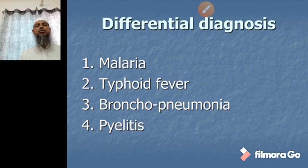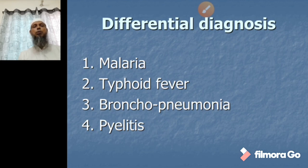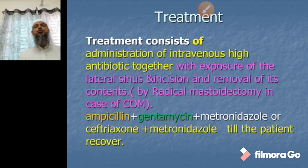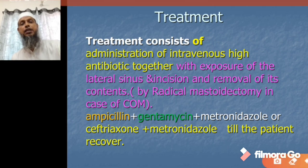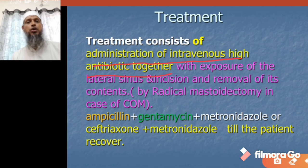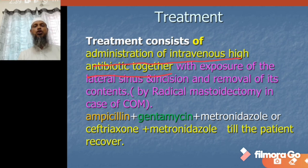The differential diagnoses are: malaria, typhoid fever, bronchopneumonia, and pyelitis. Treatment consists of intravenous high-dose antibiotic administration, together with exposure of the lateral sinus and incision and removal of its contents. Exposure of the lateral sinus should be done by radical mastoidectomy in cases of chronic otitis media.